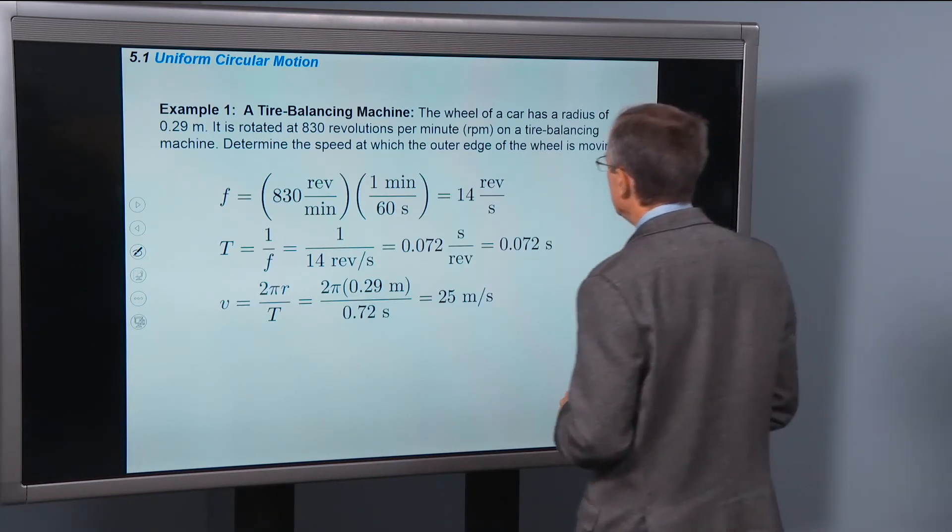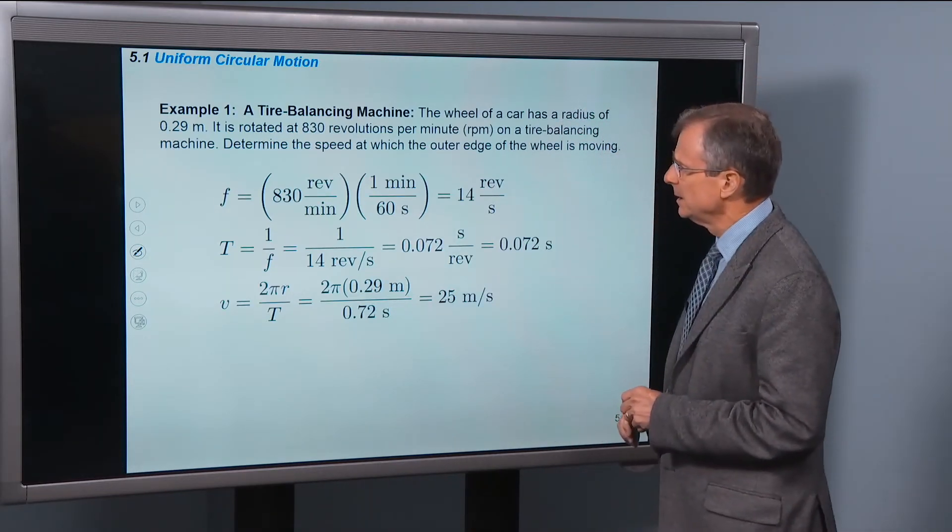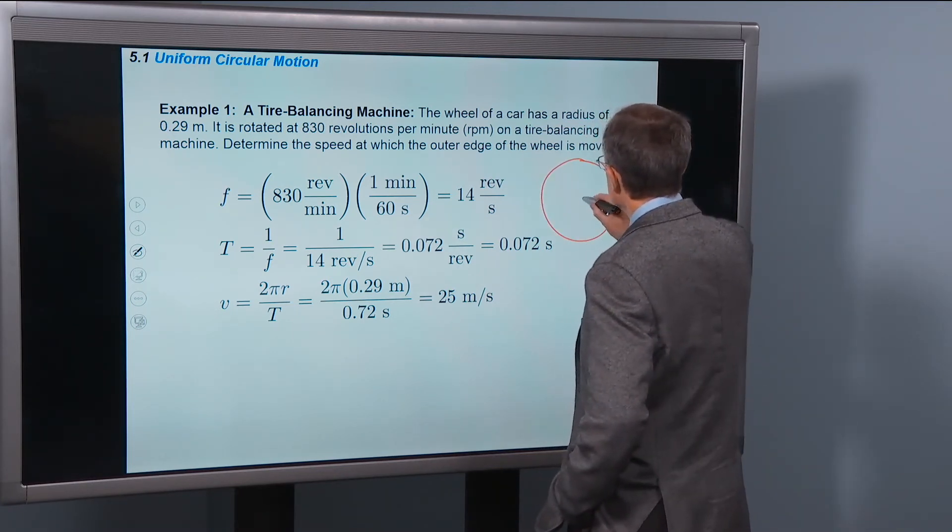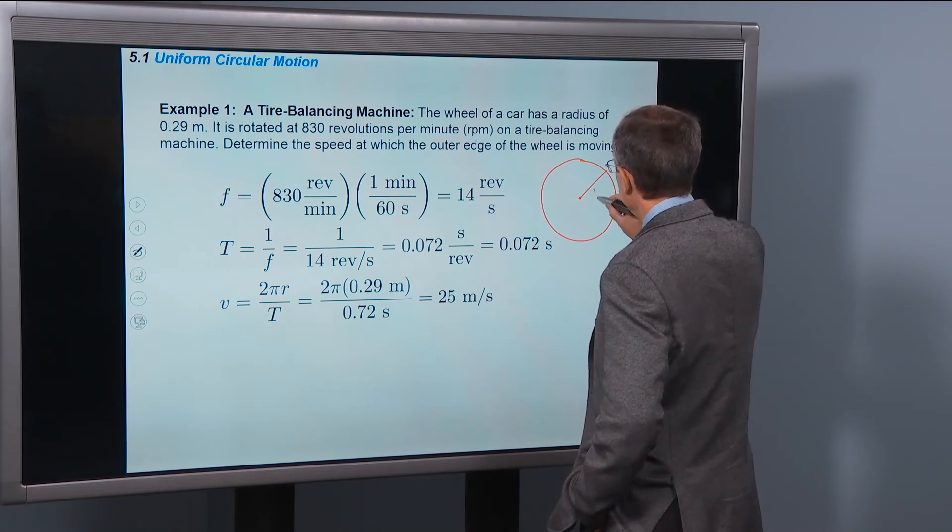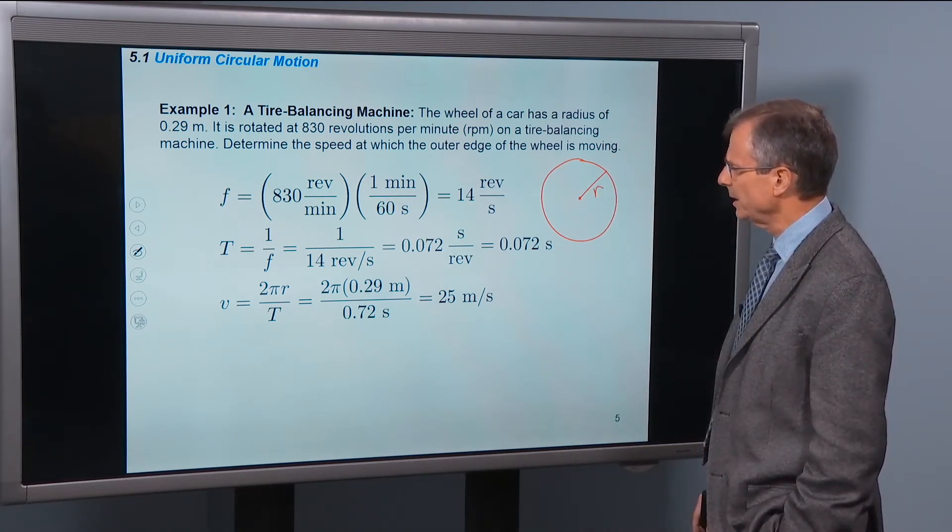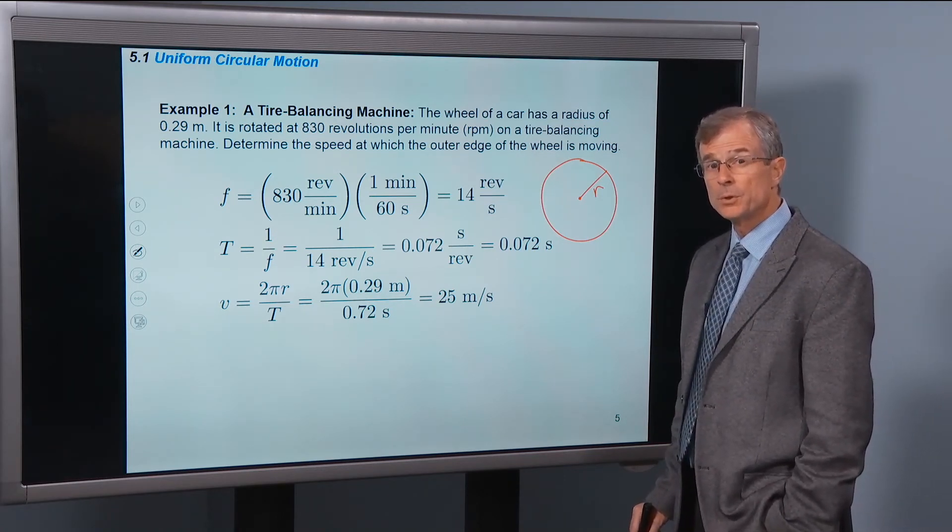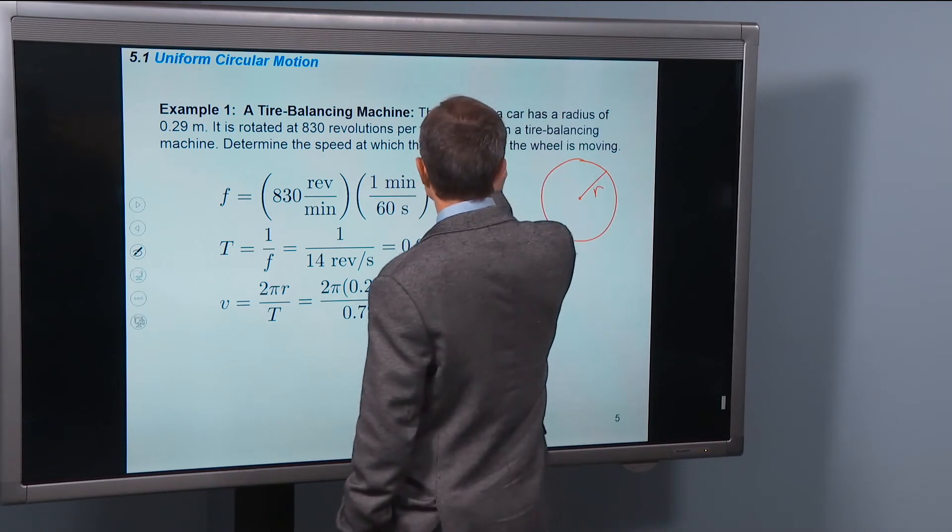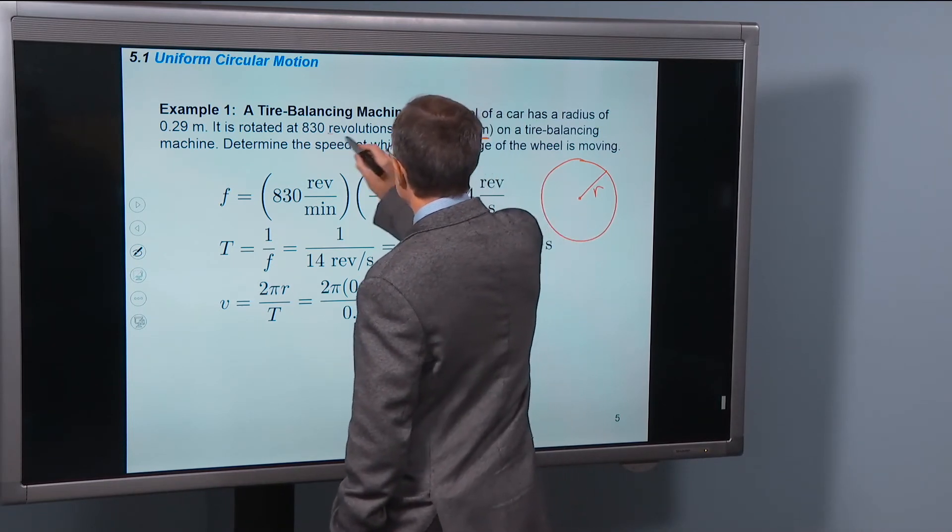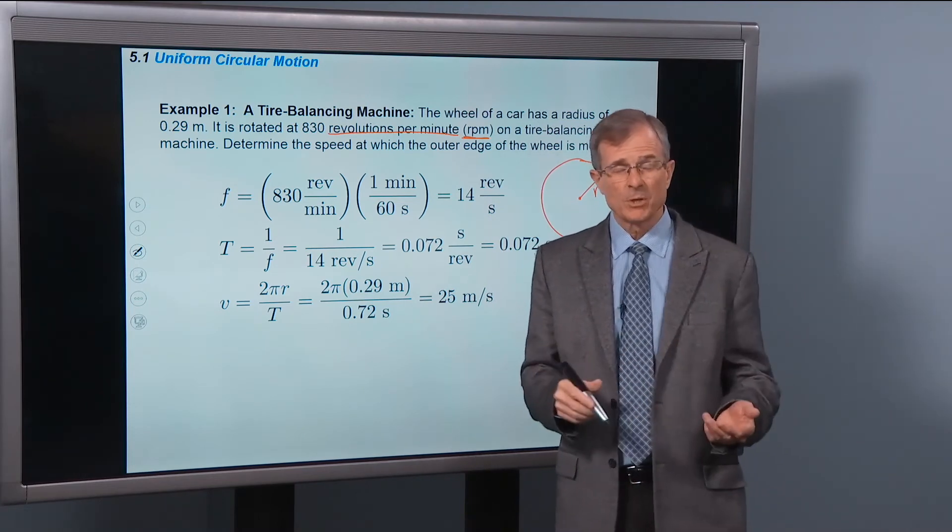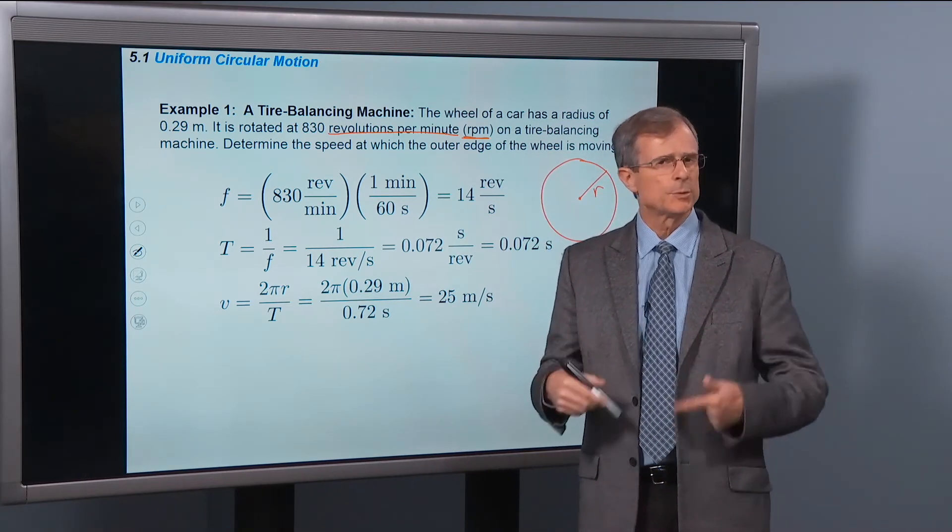Tire balancing machine. The wheel of a car has a radius of 0.29 meters. Remember the radius is the distance from the center to the outside. 0.29 meters. It's rotated at 830 revolutions per minute. And you might be saying, wow, I recognize revolutions per minute. I've heard of RPMs before because a tachometer on a car measures RPMs, revolutions per minute.